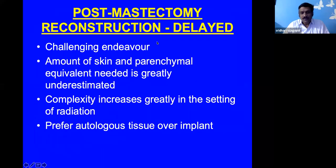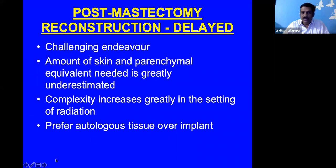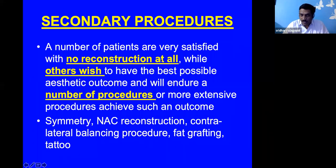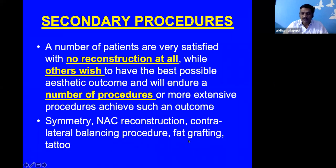In delayed reconstruction, it is challenging to accurately judge how much skin and parenchyma is required for symmetry. With radiation therapy, the complexity increases further. I generally prefer autologous tissue over implant in delayed reconstruction. Some patients just want the disease to be over and decline reconstruction; others accept multiple procedures to achieve the best aesthetic outcome. Secondary procedures to consider include symmetry adjustment, nipple-areola complex reconstruction, contralateral balancing, fat grafting, and tattoo.